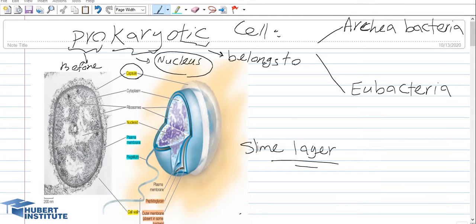The prokaryotic cells, based on the terminology, are composed of three main parts: 'pro' means before, 'karyo' means nucleus, and 'ic' means belongs to. So they don't have any sort of real nucleus; instead they have a structure called the nucleoid area. 'OID' means similar to, so this structure doesn't have any real nucleus. In contrast, they have a specific structure which contains the main hereditary material or the main DNA of the cell, which is called the nucleoid area.